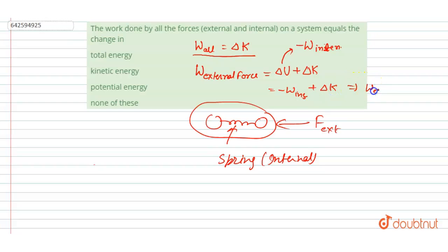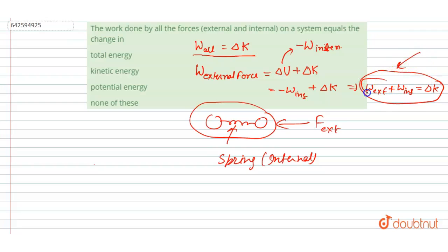Writing ΔPE as negative of the work done by internal forces, we get the final expression: work done by external plus work done by internal equals the change in kinetic energy. This shows that work done by all forces is only equal to the change in kinetic energy, because the change in potential energy is already accounted for as the negative of the internal work — so there's no need to separately write the change in potential energy.